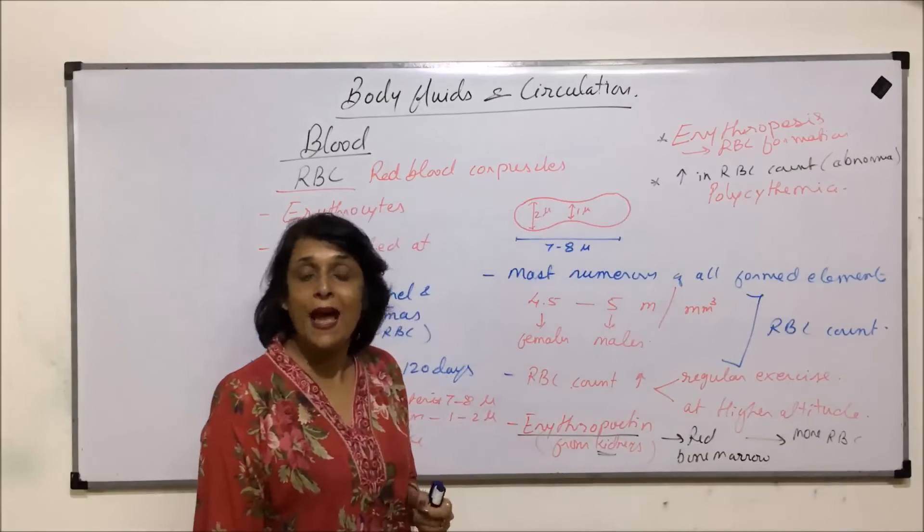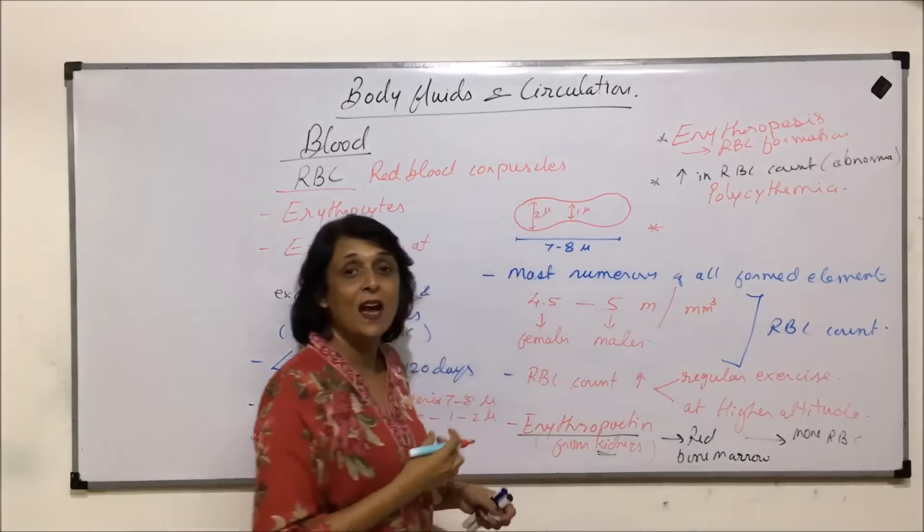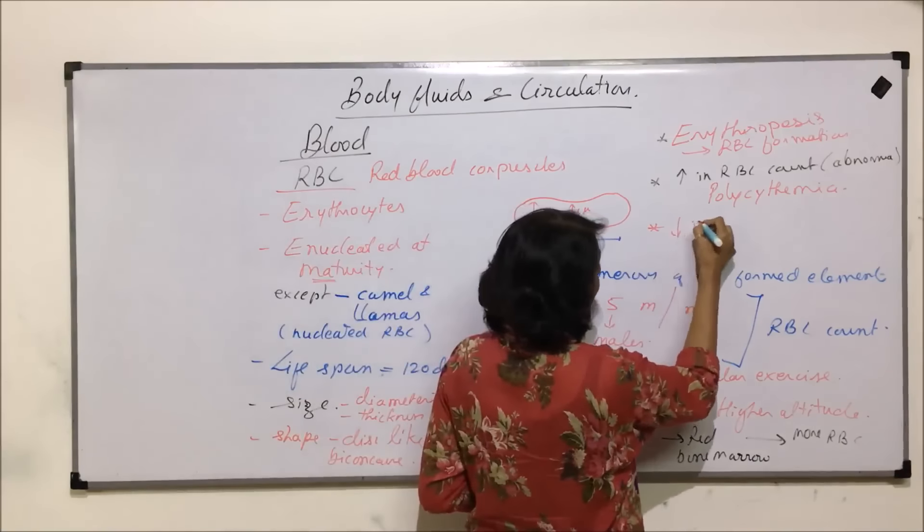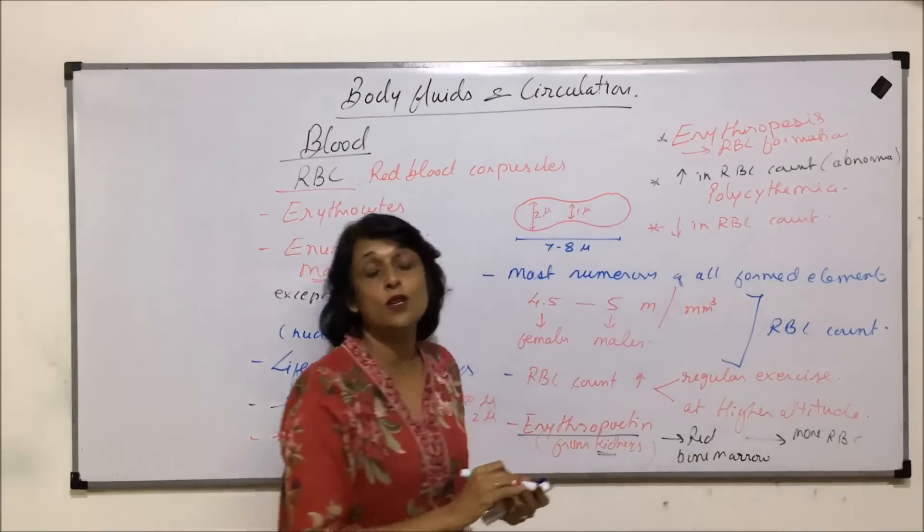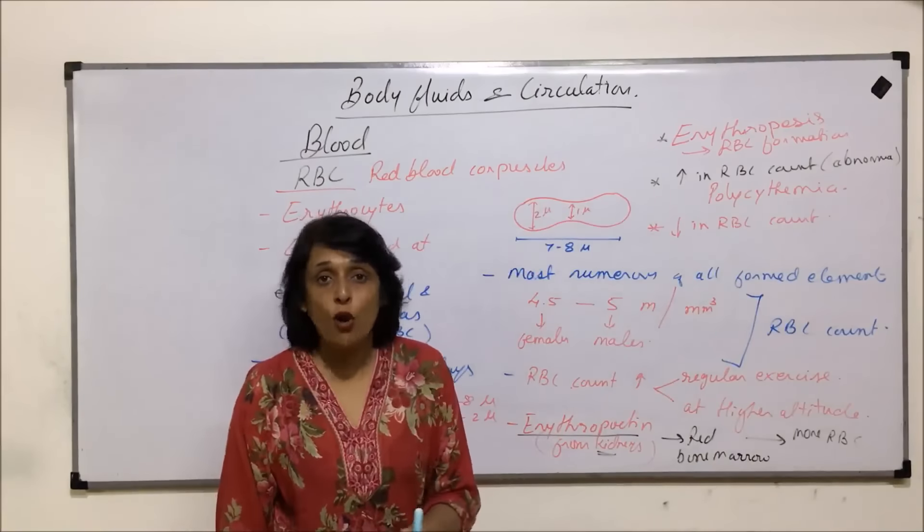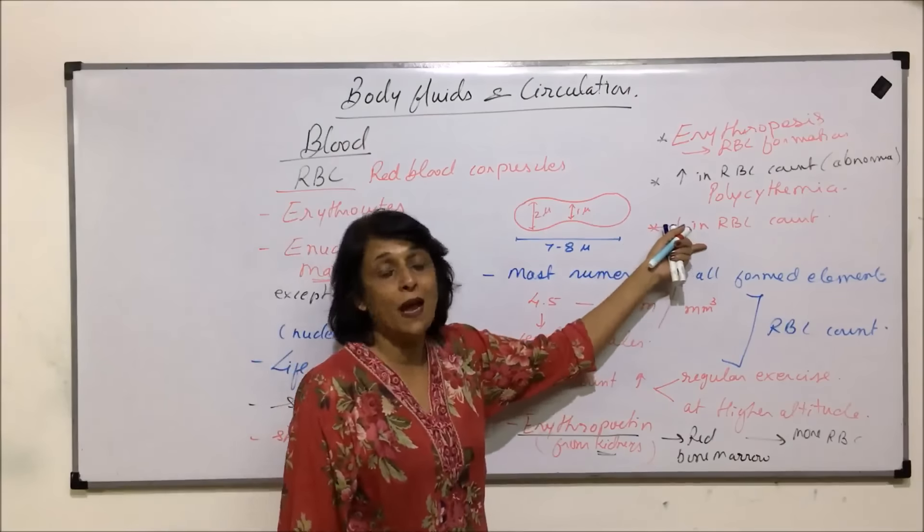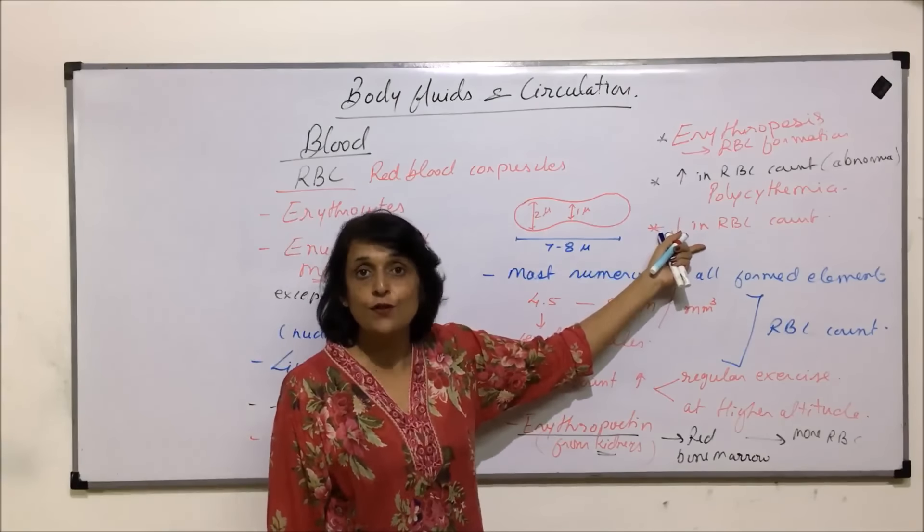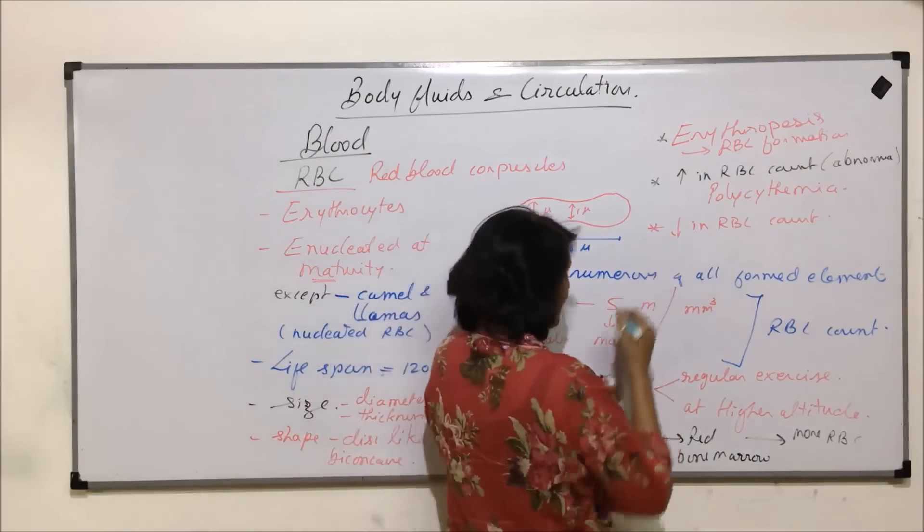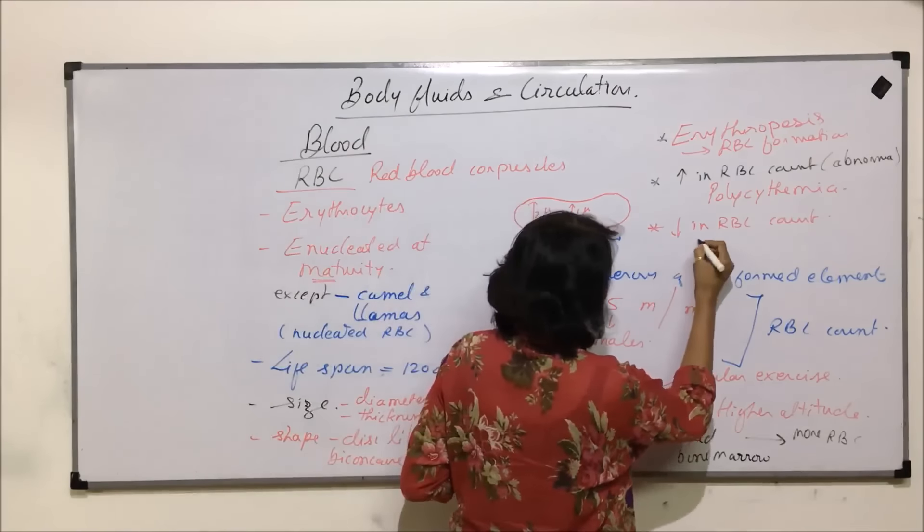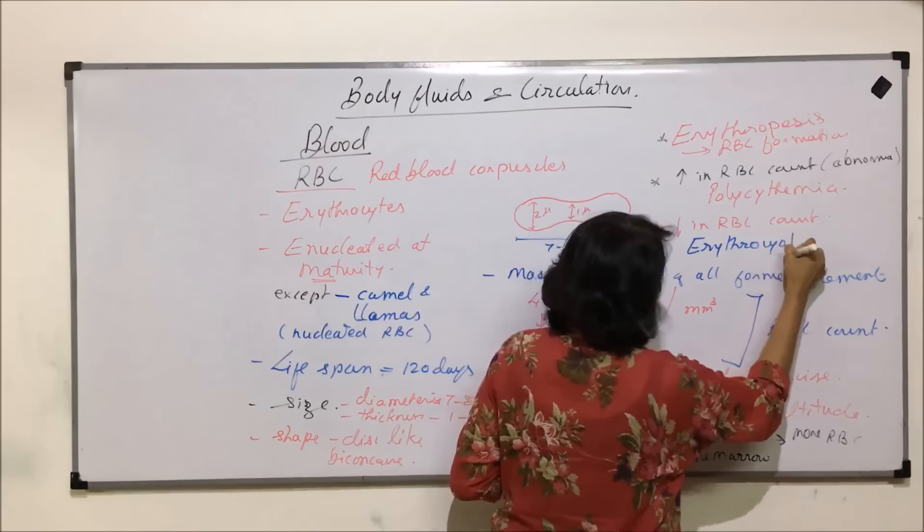If RBC count decreases, fall in RBC count, this could be because of hemorrhages, blood loss due to surgery during accidents, or there could be other factors also like some nutritional deficiencies that would result in lowering of RBC count. And that condition is known as erythrocythopenia.